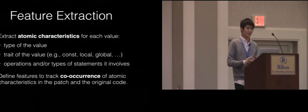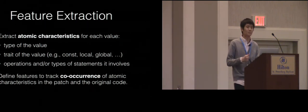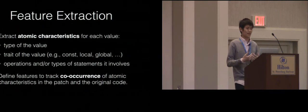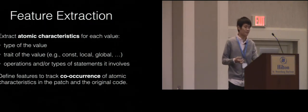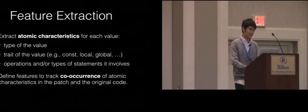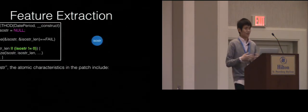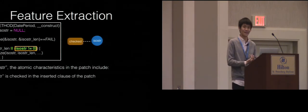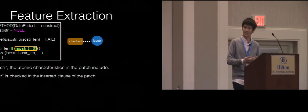Here is what Profit does. Profit runs a straightforward AST static analysis to extract atomic characteristics for each program value. This includes the type of value, the trait of value, whether it's a constant, local, or global, and the operations and types of statements it involves. Once it gets this set of characteristics, it defines features to track the co-occurrence of characteristics in the patch and in the original code. For this correct patch, the characteristic for the program value ISO_STR in the patch is that it appears in a Boolean condition checked by the patch — for simplicity, we say it is 'checked.'